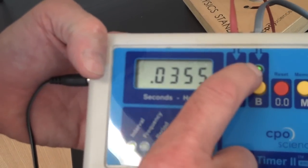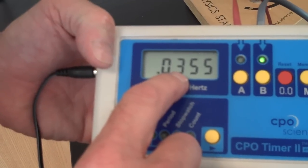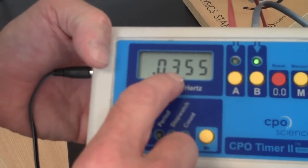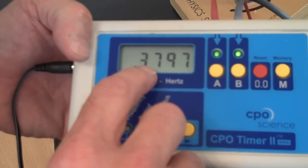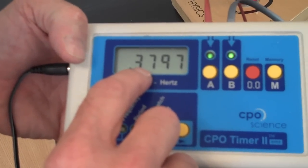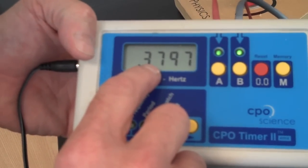I'm going to toggle B on now. This is the time it took the photo gate to pass through B. If I keep them both on A and B, this is the elapsed time that it took the car to travel between photo gate A and B.